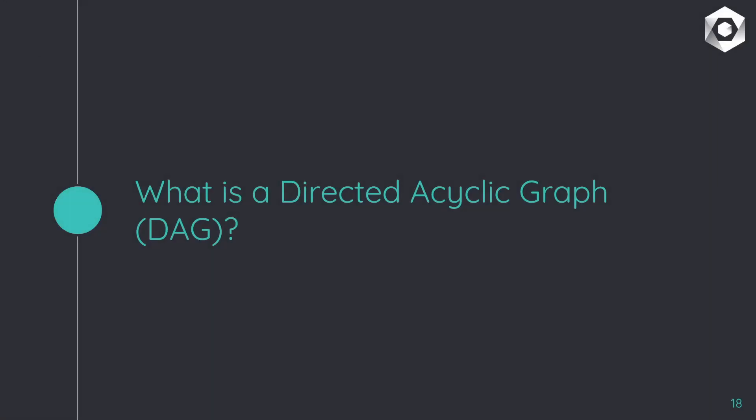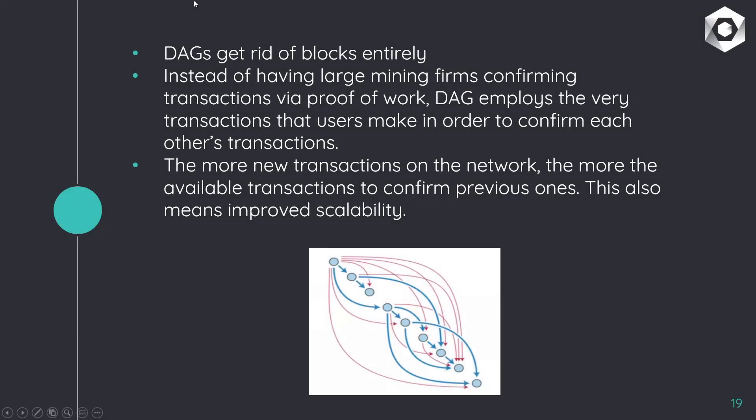Now let's compare this to the DAG network — directed acyclic graph — that Constellation uses, also known as the Hypergraph. DAGs get rid of blocks entirely. Instead of having large mining firms confirming transactions through proof of work like blockchains do, DAGs employ the very transactions that users make in order to confirm each other's transactions. So the more new transactions on the network, the more available transactions there are to confirm previous ones. That is huge when it comes to scalability — as the network grows, it gets more efficient, better, and faster, which is exactly what big data needs.